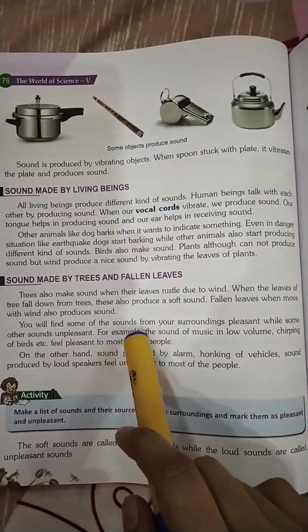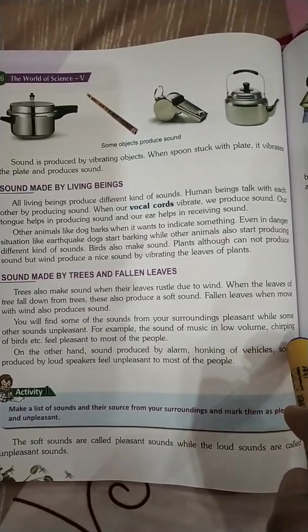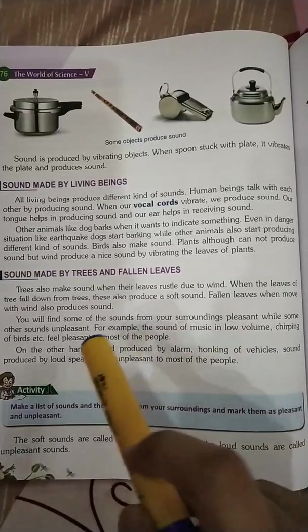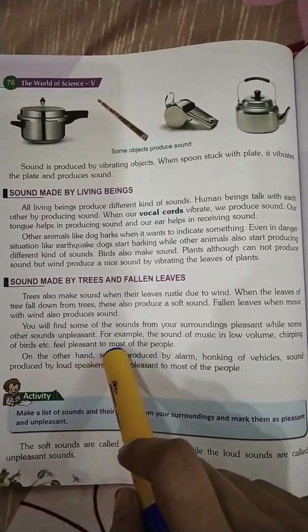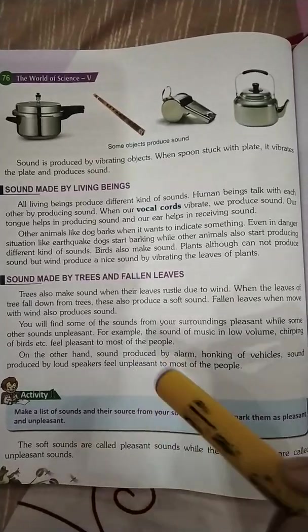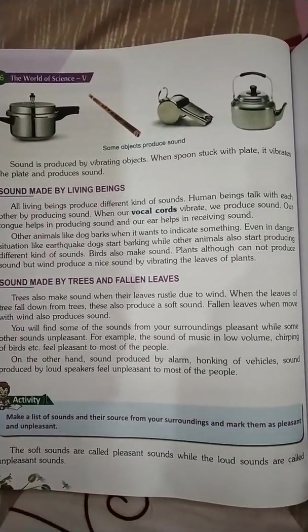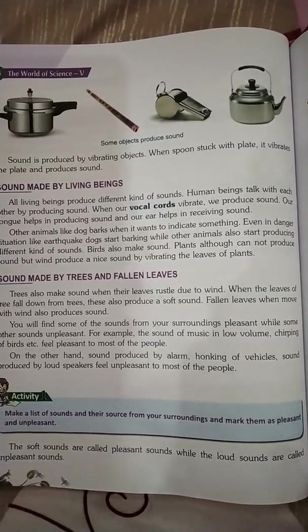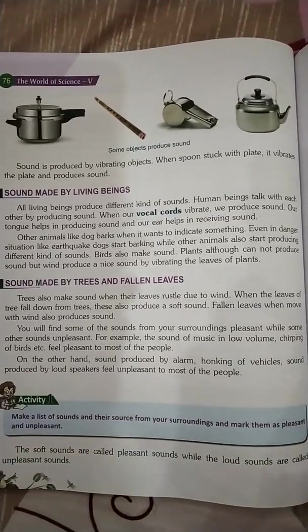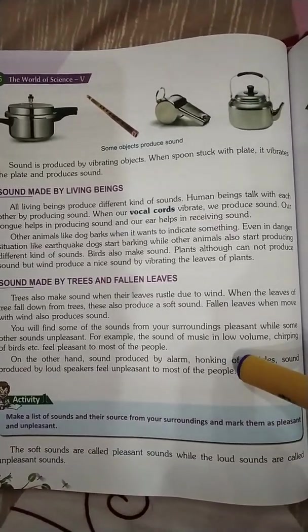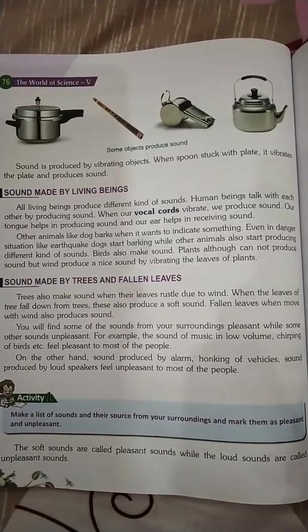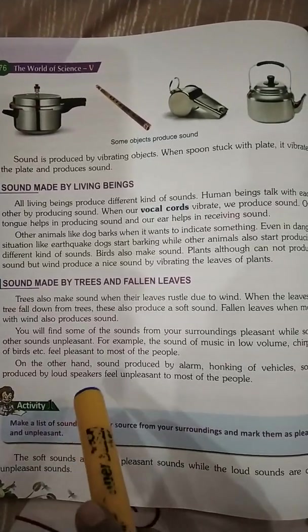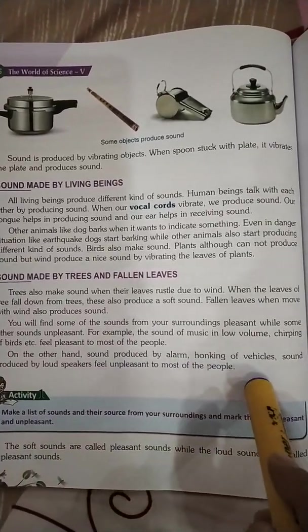You will find some sounds from your surroundings pleasant while some other sounds unpleasant. For example, the sound of music at low volume and chirping of birds feel pleasant to most people. ہمارے surroundings میں کچھ sounds بہت اچھے ہوتے ہیں اور کچھ unpleasant ہوتے ہیں۔ Low volume کا music یا چڑیوں کی چہچہاہٹ زیادہ تر لوگوں کو اچھی لگتی ہے۔